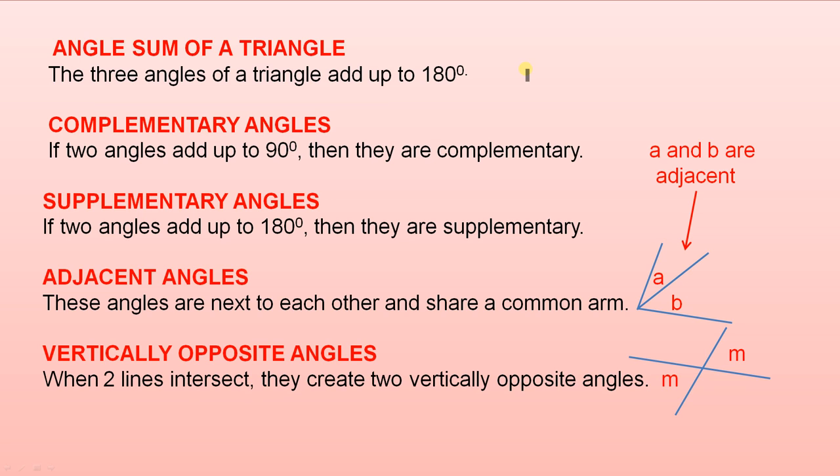Complementary angles. If two angles add up to 90 degrees, then they are complementary. So if we have an example, if two angles are as follows, say 60 degrees and 30 degrees, those two angles add up to 90 degrees, so they are complementary.